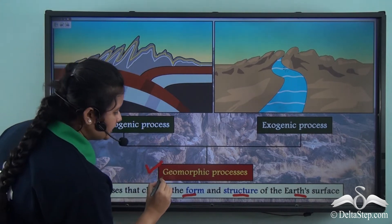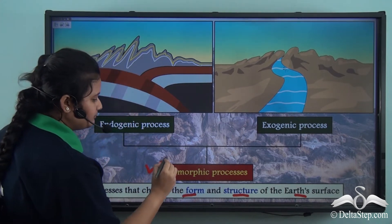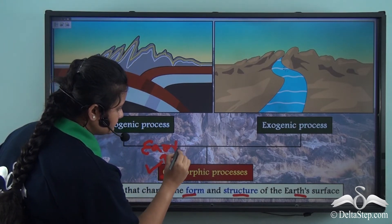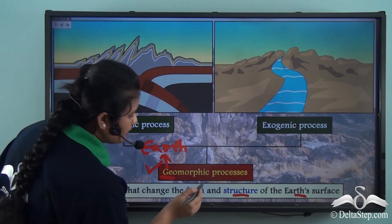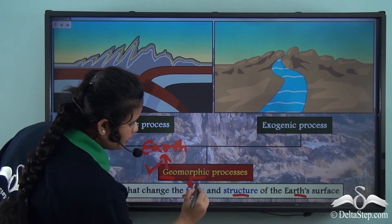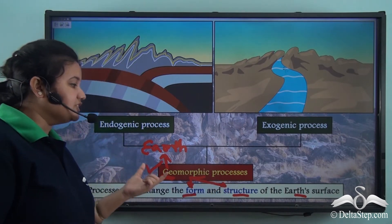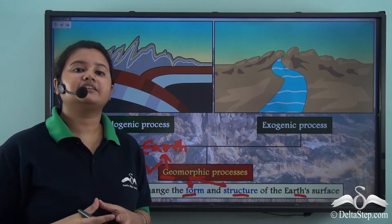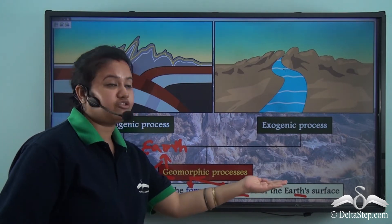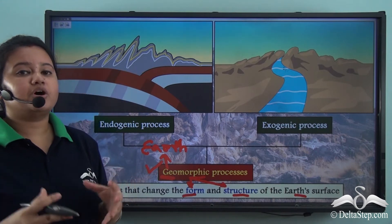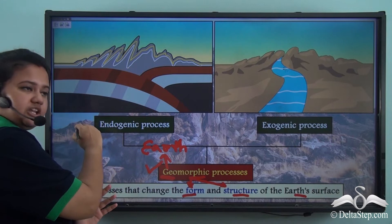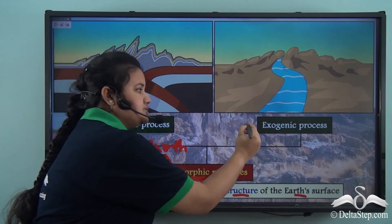These forces that change or transform the form and structure of the Earth's surface are called geomorphic processes. The word 'geo' means Earth and 'morphic' means form or structure. Thus, geomorphic processes are the processes that change the form and structure of the Earth's surface, and they include two processes: endogenic processes and exogenic processes.